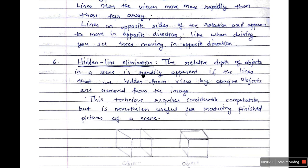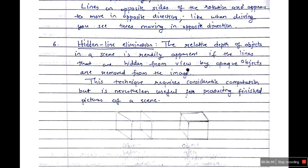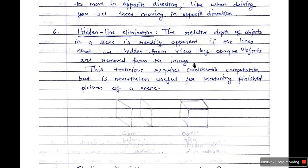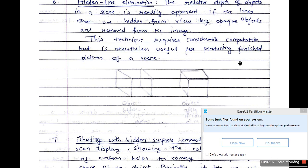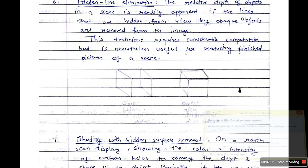Hidden line elimination. The relative depth of objects in a scene is readily apparent if the lines that are hidden from the view by opaque objects are removed from the image. Obviously, if you cannot see them, you don't display them. This technique requires considerable computation but is nevertheless useful for producing finished pictures of a scene. Why this is important? Because it doesn't confuse the user. Though this is very difficult to obtain, it's really important so that you get a clean and finished look. For example, see this is a cube that we have.